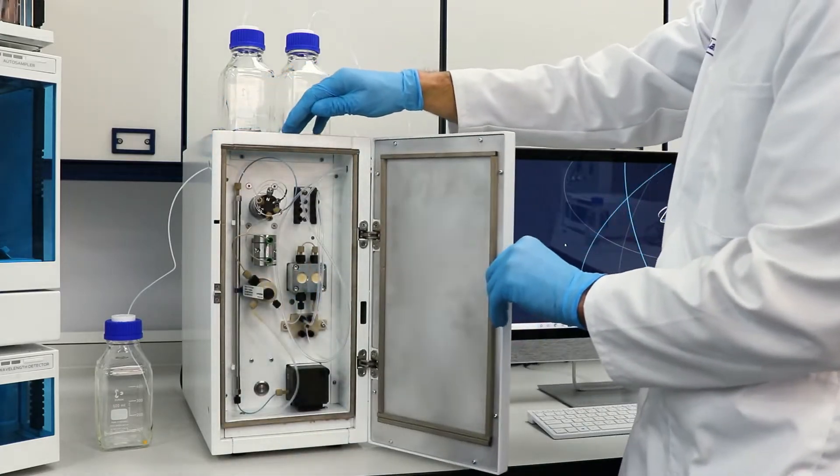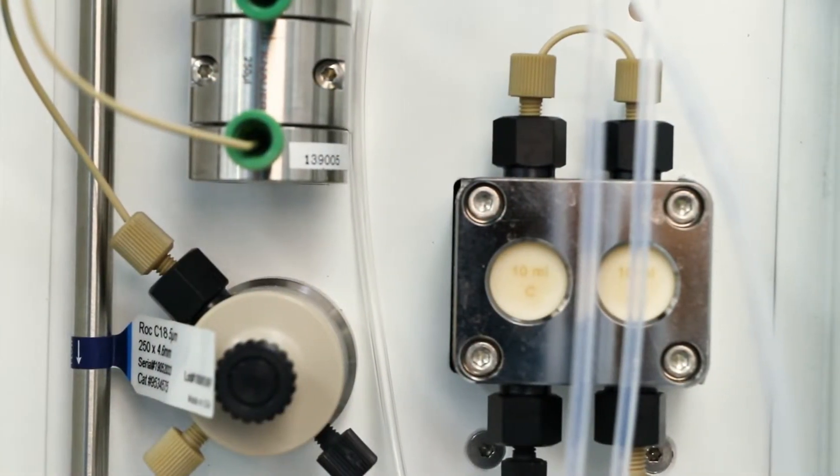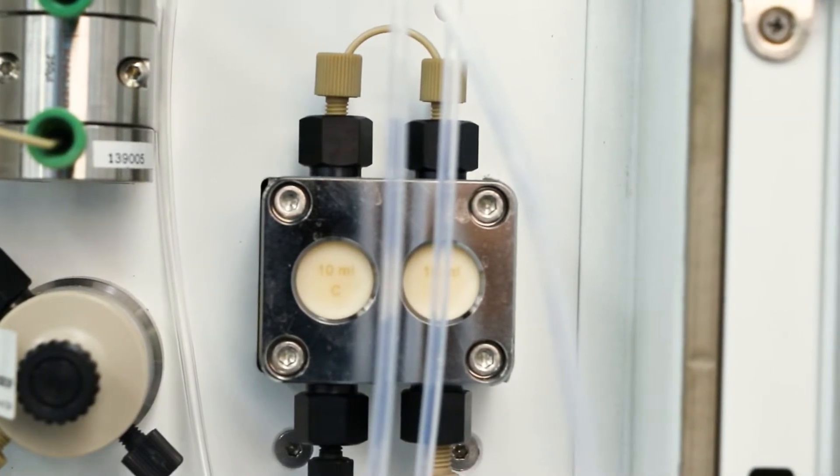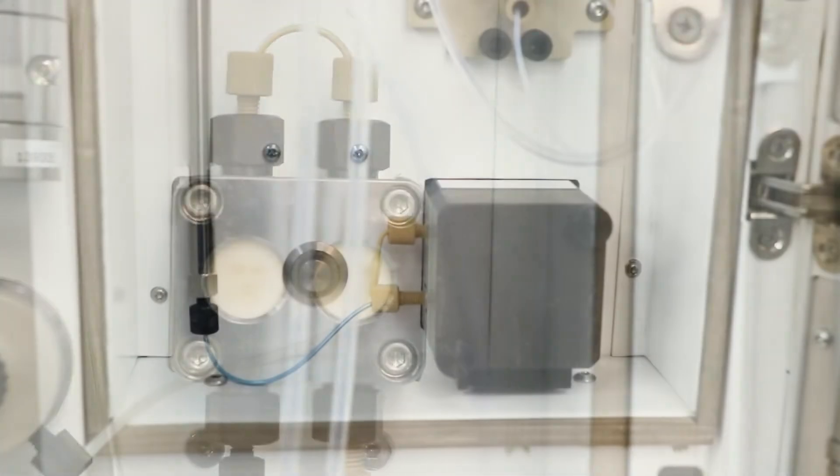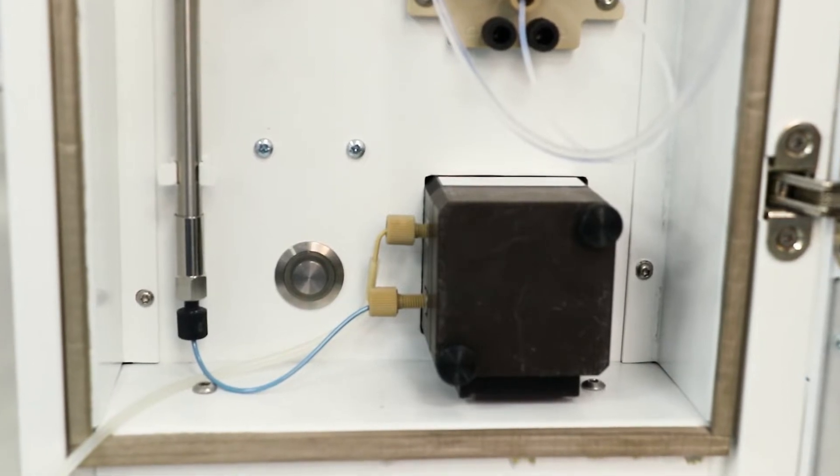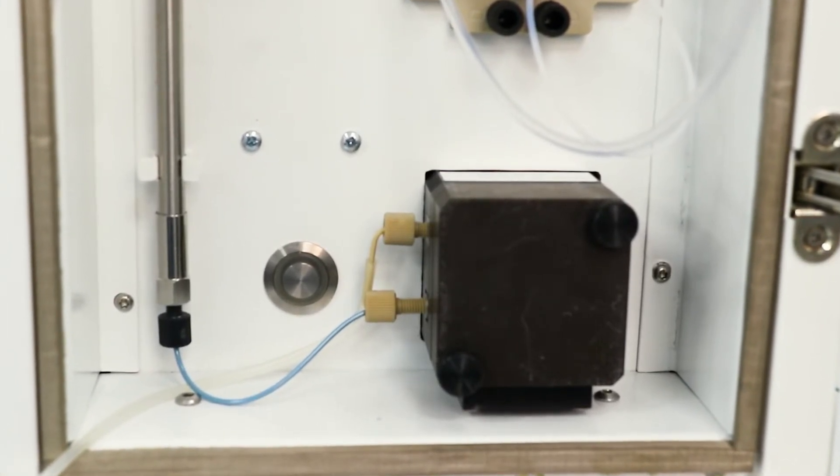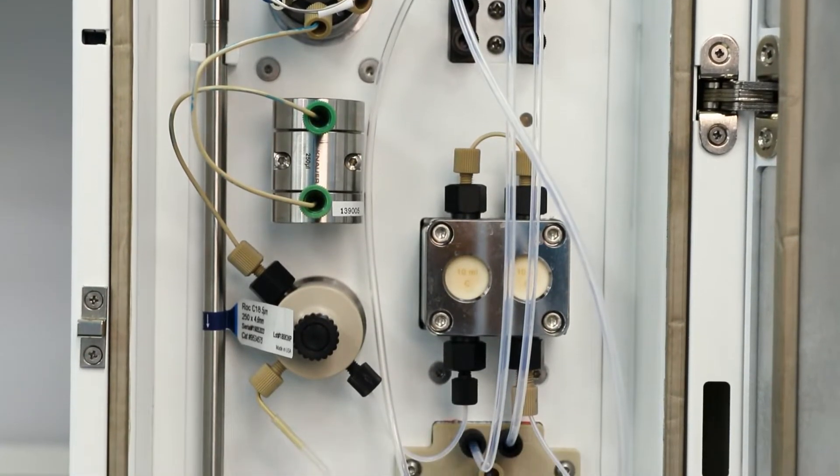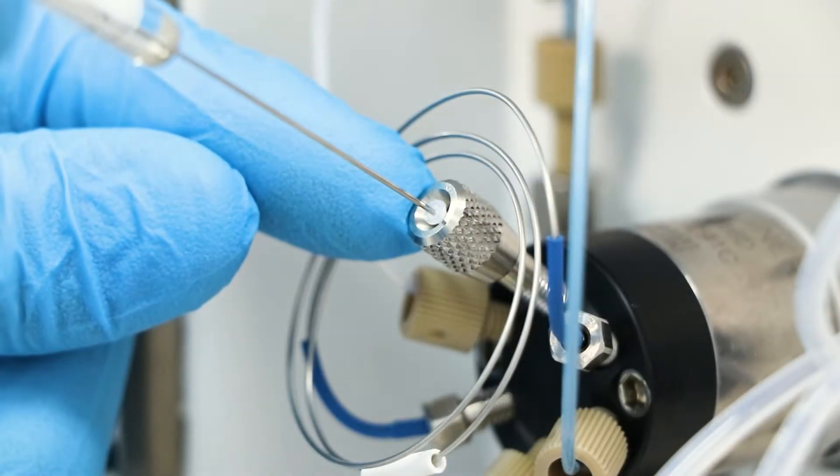This includes a low pressure gradient quaternary pump, which allows for the delivery of up to four solvents for maximum flexibility, a UV detector, the most commonly used cold chromatography detector, a radio detector that is based on LabLogic's proven flow ram solution, and a manual injector.